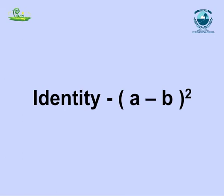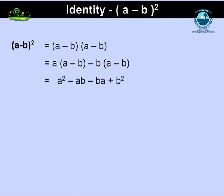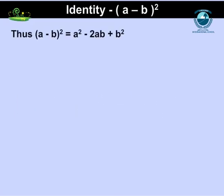For identity (a-b)²: since (a-b)² means (a-b)(a-b), multiplying term by term, every term of the polynomial is multiplied by every term in the binomial. So, (a-b)² = a²-ab-ba+b². Adding the like terms, we get (a-b)² = a²-2ab+b².